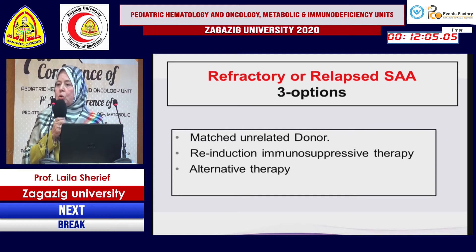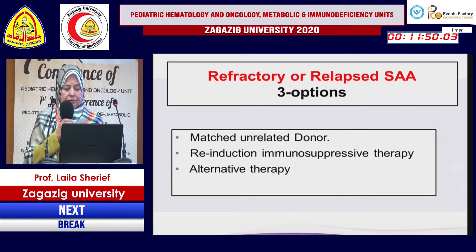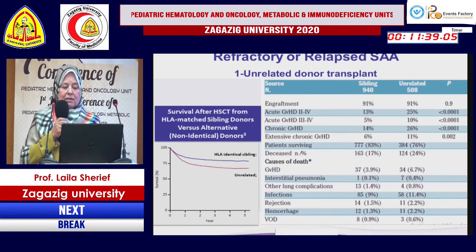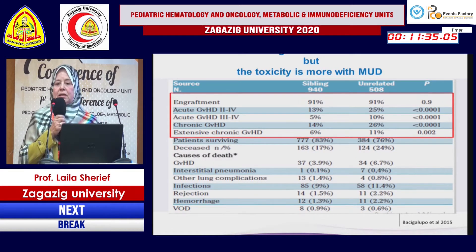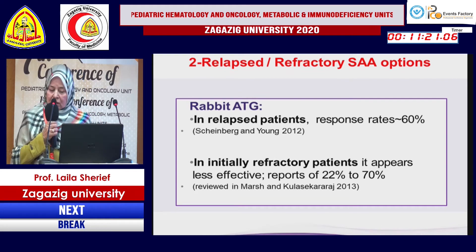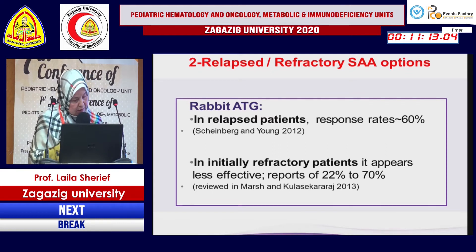Three other options exist for management of acquired aplastic anemia: matched unrelated donor transplant, re-induction with immunosuppressive therapy, and new alternative therapies. Matched unrelated donor transplant has slightly lower overall survival than matched sibling donor and more morbidity. Rabbit ATG re-induction for patients who failed first immunotherapy can achieve about 60% response, though results are less favorable since the patient was initially non-responsive to immune therapy.